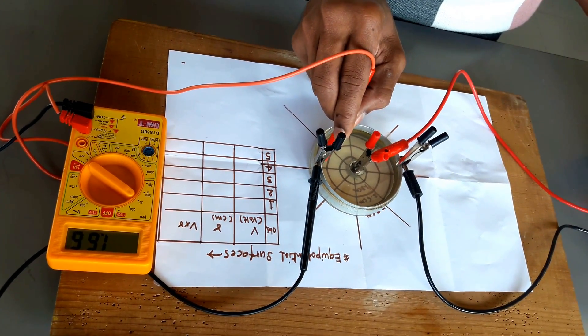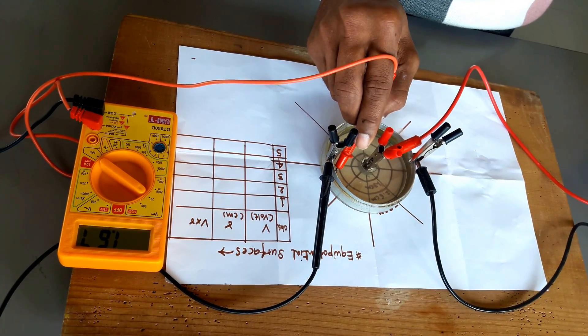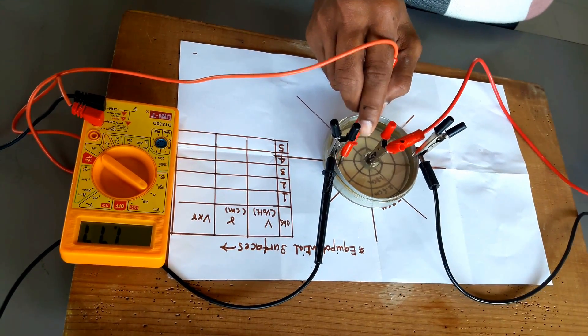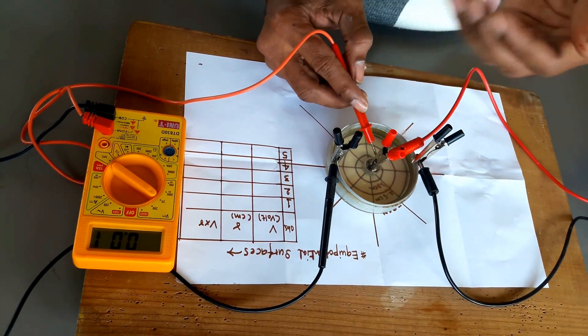One more result we can have by this, electric potential is inversely proportional to R. If you do some mathematics, we will find the relation.